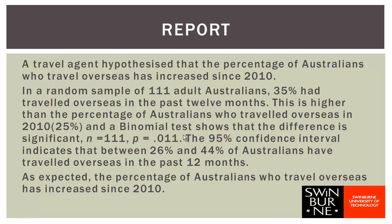We then give the 95% confidence interval: 'The 95% confidence interval indicates that between 26% and 44% of Australians have travelled overseas in the past 12 months.' And finally we finish with a conclusion that explicitly relates back to the hypothesis: 'As expected, the percentage of Australians who travel overseas has increased since 2010.'